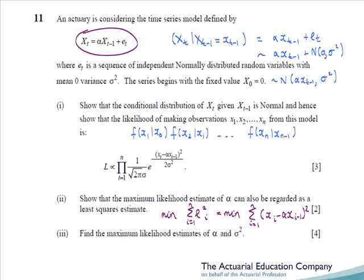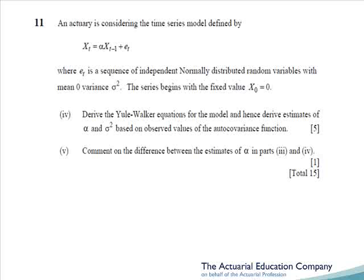Part 3 asks us to actually calculate the maximum likelihood estimates — so even if you hadn't been able to obtain the likelihood, you could simply take it, log it, differentiate with respect to alpha and set to zero, and differentiate with respect to sigma and set to zero. Part 4 asks us to derive the Yule-Walker equations, which would have given students hoping for a big time series question a sigh of relief. We then need to derive estimates of alpha and sigma squared based on observed values of the autocovariance function, obtaining the Yule-Walker equations for gamma_0 and gamma_1, then using observed values gamma_0 hat and gamma_1 hat to rearrange for alpha and sigma squared.